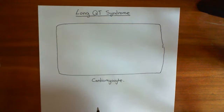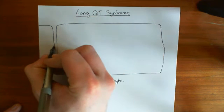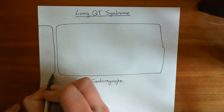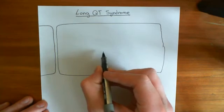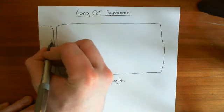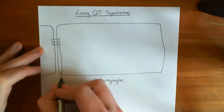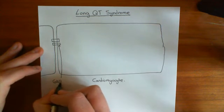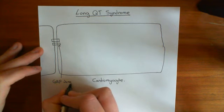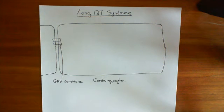How does a cardiomyocyte get stimulated initially? It has electrical connections between it and its neighboring cardiomyocyte. So here we have a neighboring cardiomyocyte, and there is a connection between them — an electrical window known as a gap junction. These gap junctions are found in other excitable cells as well, including neurons. They are electrical synapses as opposed to chemical synapses.